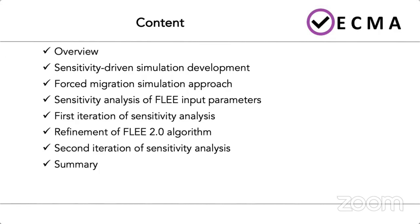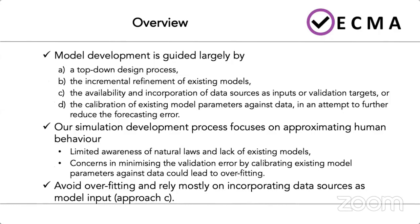In current research, model development is guided largely by four main approaches. First is a top-down design process, which is a planned implementation of natural laws representing an aspect of the physical world. Second is the incremental refinement of existing models by adding desired aspects missing in the original. Third is the availability and incorporation of data sources as inputs or validation targets. And last is the calibration of existing model parameters against data to further reduce forecasting error.